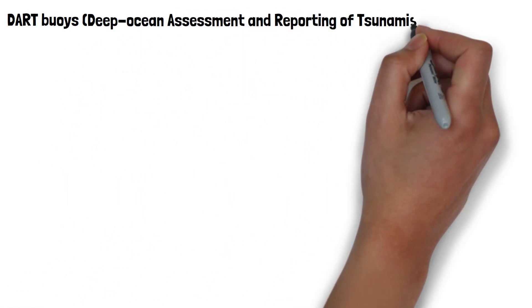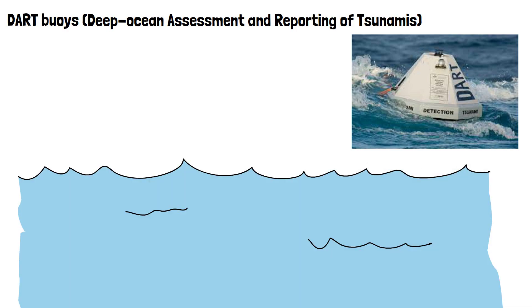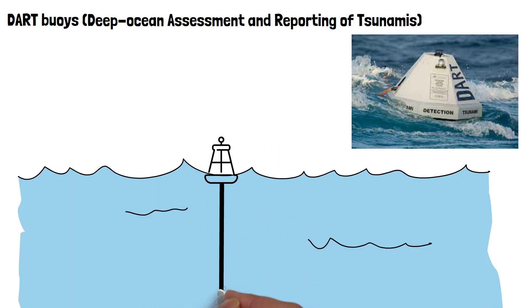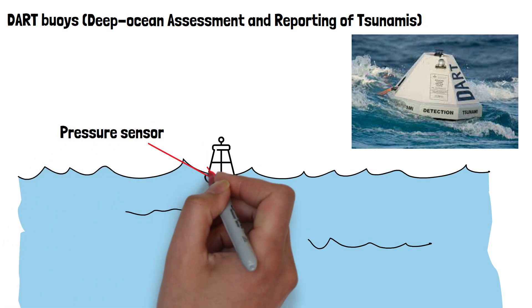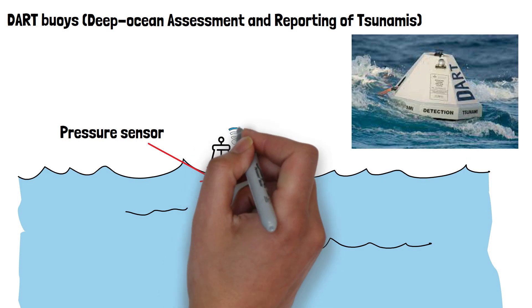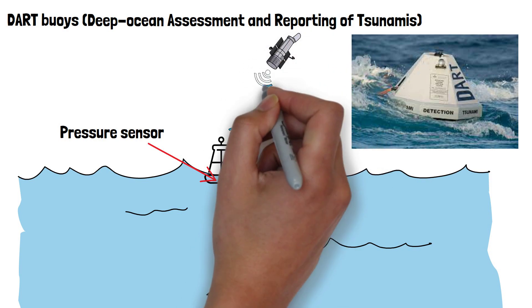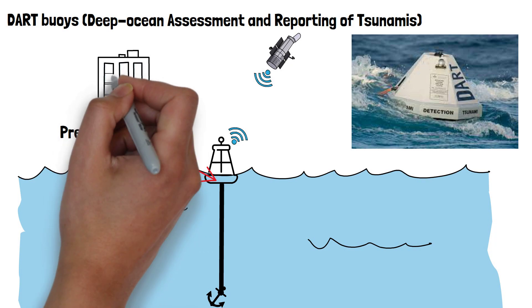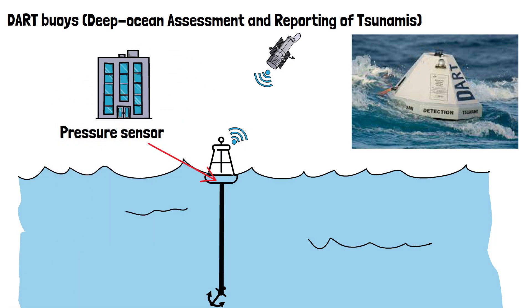DART system buoys are also used for tsunami monitoring. DART stands for Deep Ocean Assessment and Reporting of Tsunamis. Each DART buoy consists of a surface buoy anchored to the ocean floor by a mooring line. The pressure sensor located at the bottom of the buoy measures the water pressure above it. When a tsunami wave passes over the sensor, it causes changes in water pressure. These pressure changes are recorded and transmitted to the buoy's electronics above, and then via satellite the buoy transmits this data in real-time to a ground station or satellite receiver, ensuring data can still be sent from remote ocean locations.